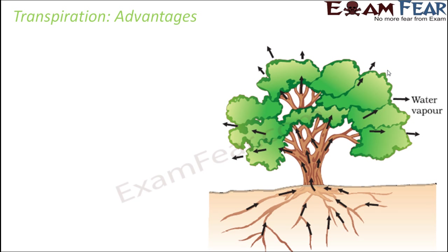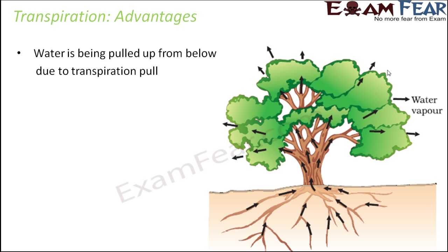There are several advantages associated with transpiration. Water is being pulled up from below due to transpiration pull. When we water plants, we give water to the soil — to the base of the plant. The plant gets its water from the soil through the roots. These roots absorb water from the soil, and then this water moves up through the stem and reaches the leaves.